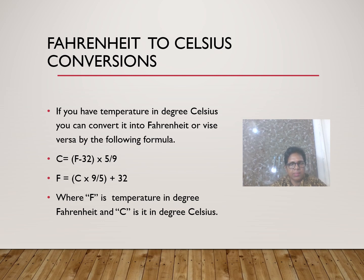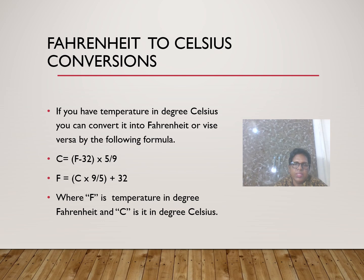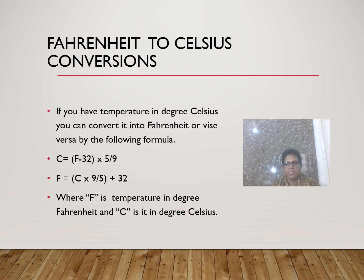If you have temperature in Fahrenheit and want to convert it to Celsius, apply the formula: C = (F − 32) × 5/9. Where F is temperature in degree Fahrenheit and C is temperature in degree Celsius.